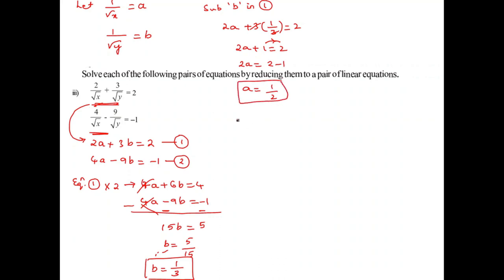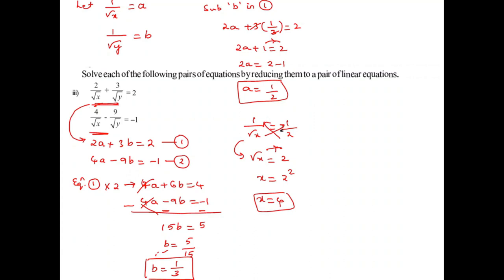Substituting back: 1 by root x equals A equals 1 by 2, so root x equals 2, meaning x equals 4. Similarly, 1 by root y equals B equals 1 by 3, so root y equals 3, meaning y equals 9. The required solution is x equals 4 and y equals 9.